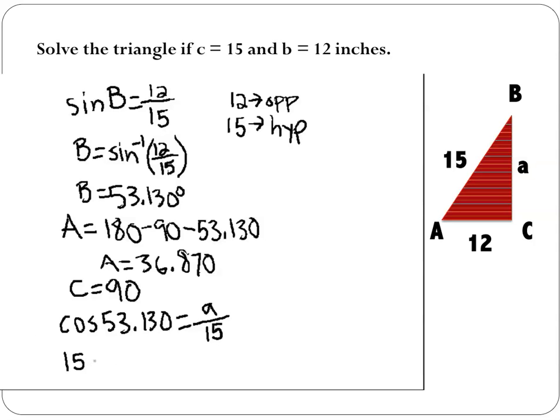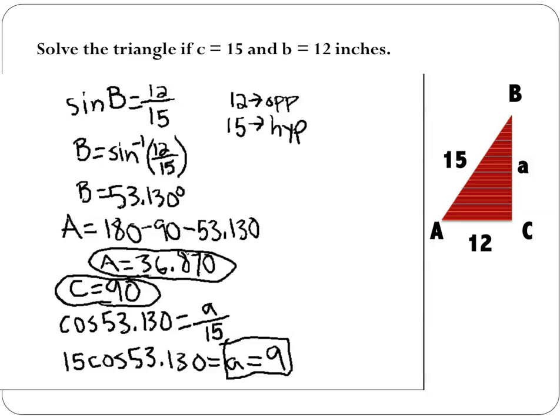And then to solve, I just bring the 15 over and type in my calculator 15 times the cosine of 53.130, and I get a nice, even answer of nine. So now we have the missing side and all the missing angles. And that's how you solve a triangle where you only know two of the sides.